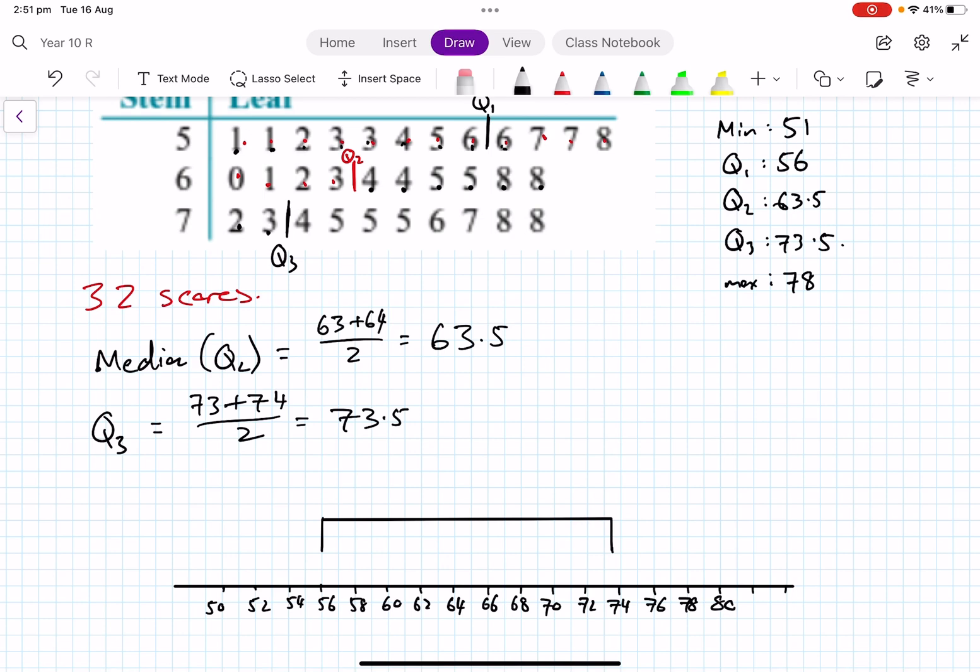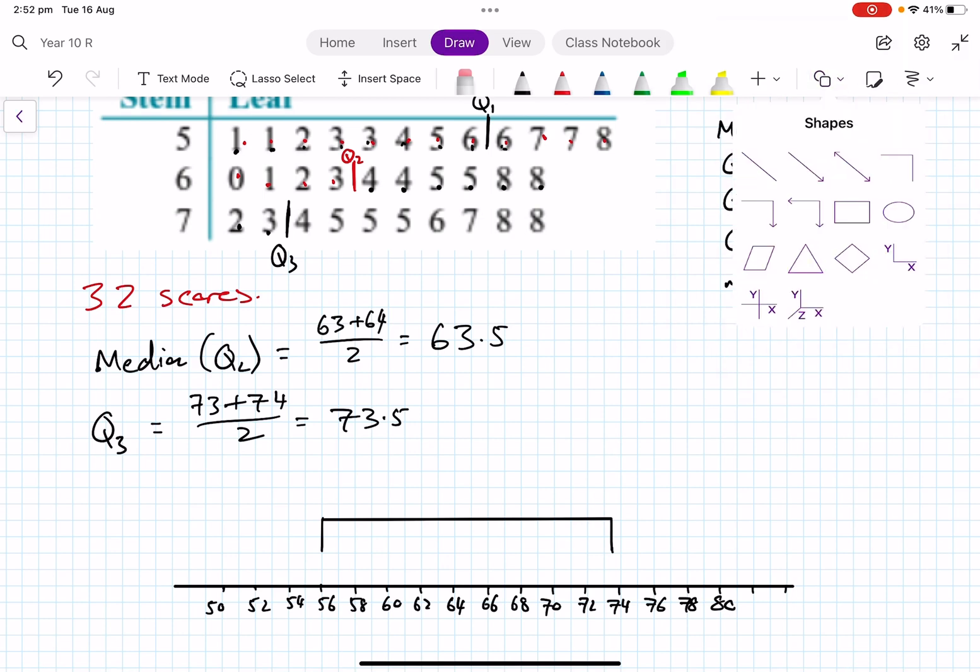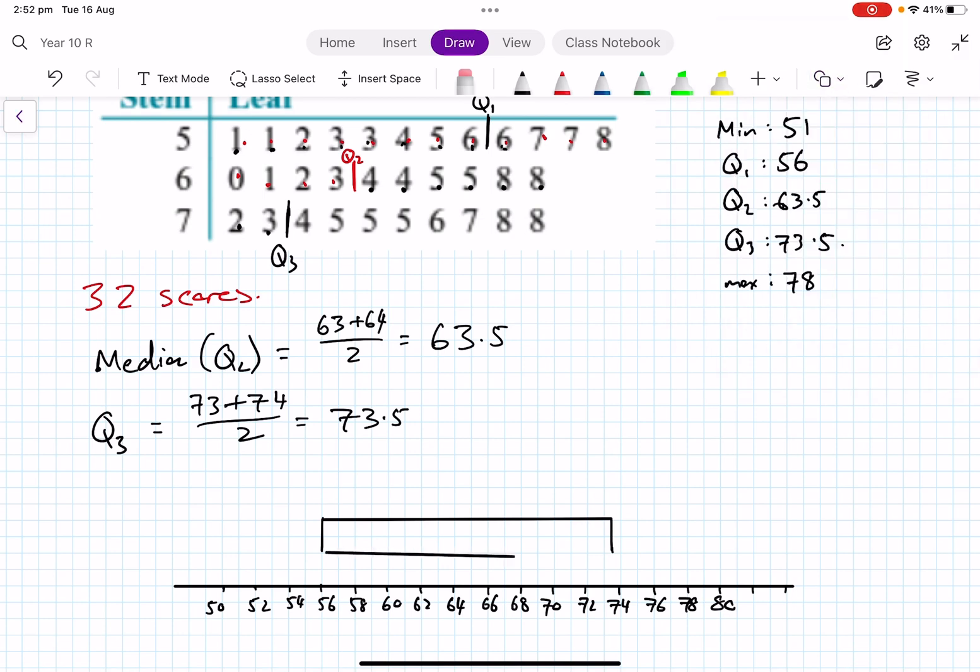Now of course we need to use a ruler. I'm just going to use my helpful straight line that's going to allow me to do this nice and neatly. I mean, if it's slightly wider or bigger than this, it's probably fine. And then we need to do our Q2, our median, 63.5. So that's 63, and then halfway between would give me this one here.